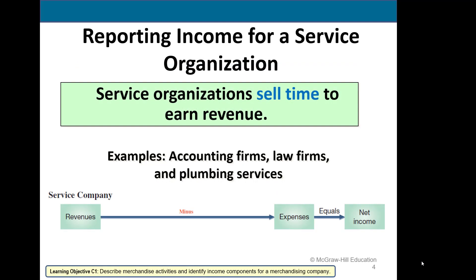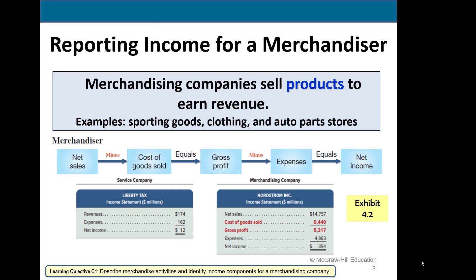So far we've talked about a service company. Now we're going to switch gears and look at merchandising companies. Service organizations basically sell their time, so they have revenues and expenses to equal net income. A merchandiser also has a product, so we have a new expense which is cost of goods sold.